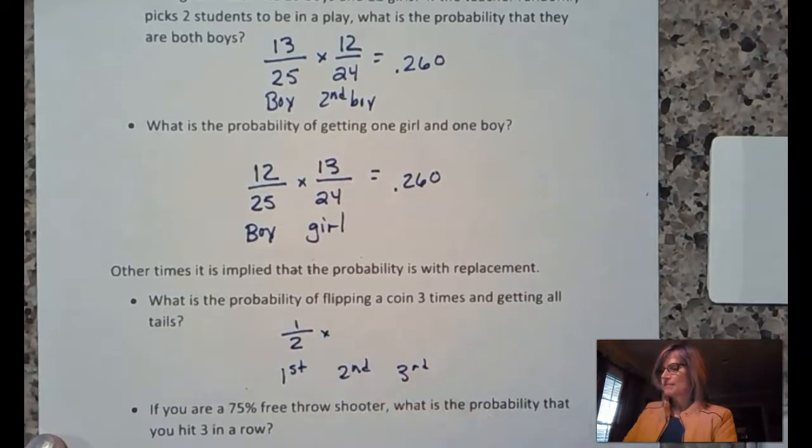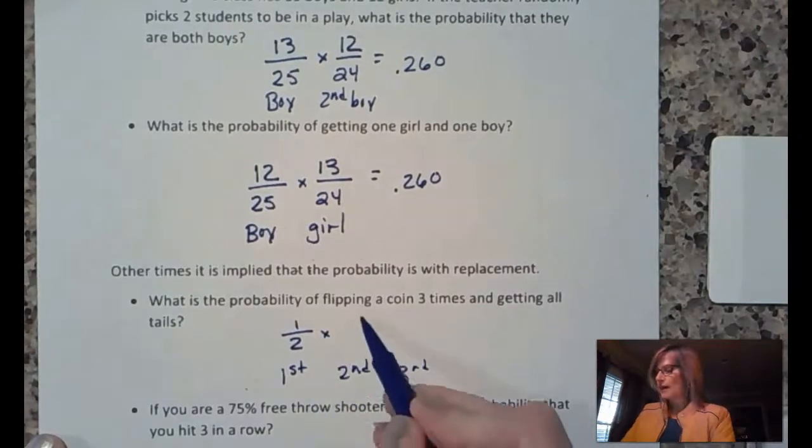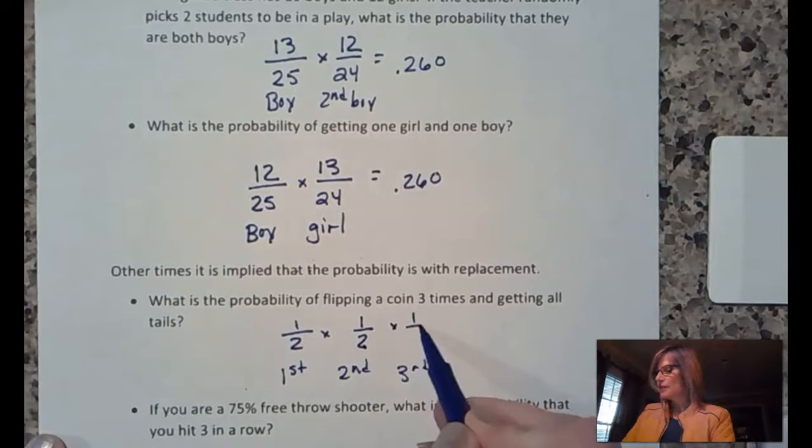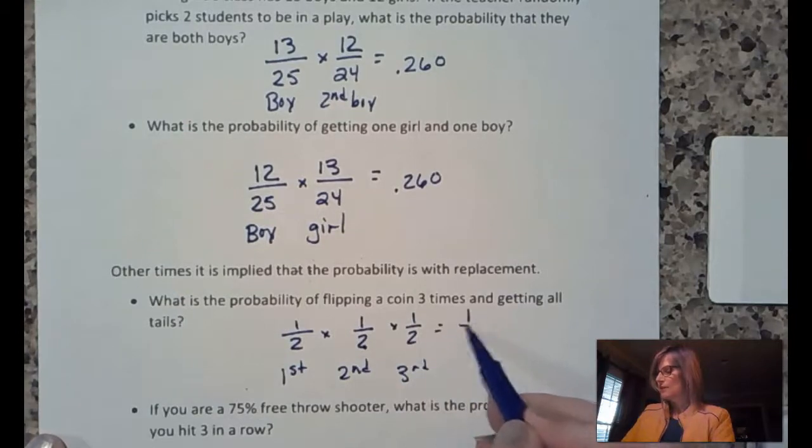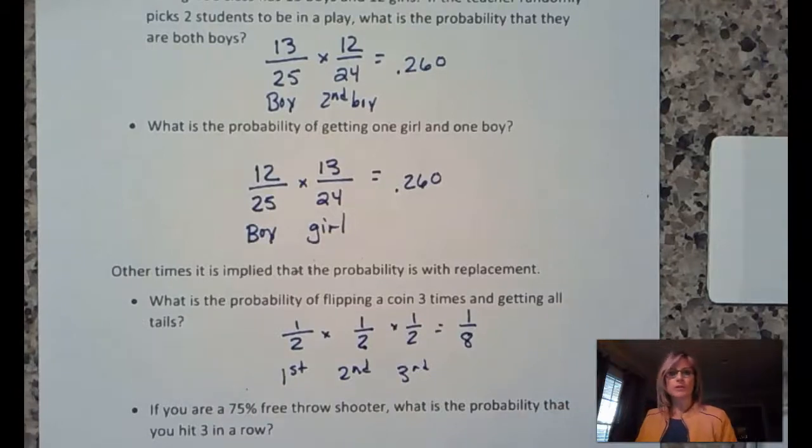The first time, probability is a half. Second time, it's still a half. Third time, it is still a half. So, that will end up giving us a probability of one eighth. And you're welcome to change that to a decimal if you want to. But the probability doesn't change.